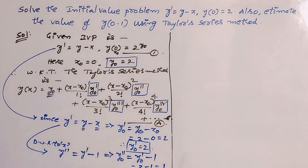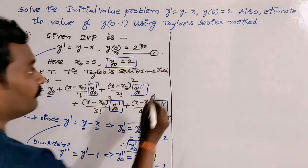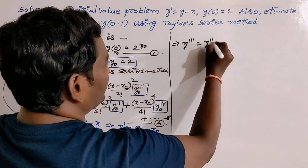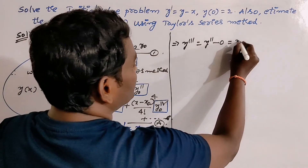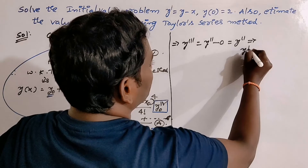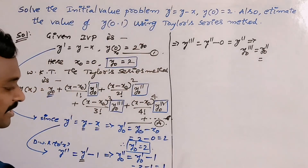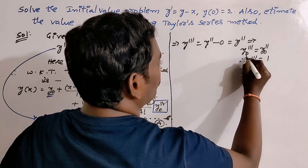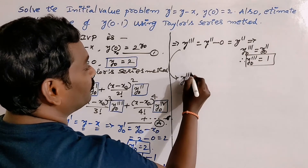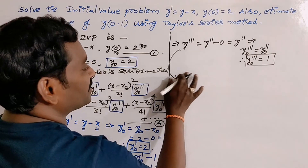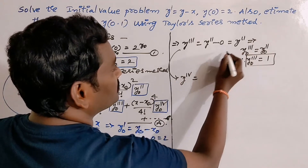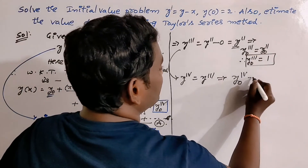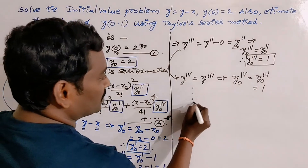Taking another derivative with respect to x: y''' = y'' - 0 = y''. So y₀''' = y₀'' = 1. Taking yet another derivative, the fourth derivative y'''' = y'''. So y₀'''' = y₀''' = 1. And so on — substitute all these values into equation A, the Taylor series.